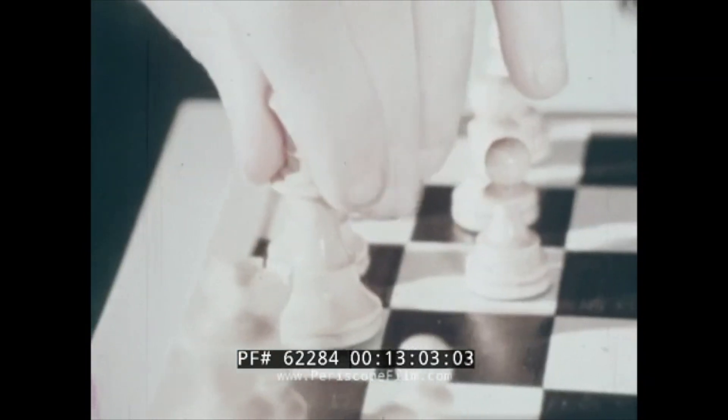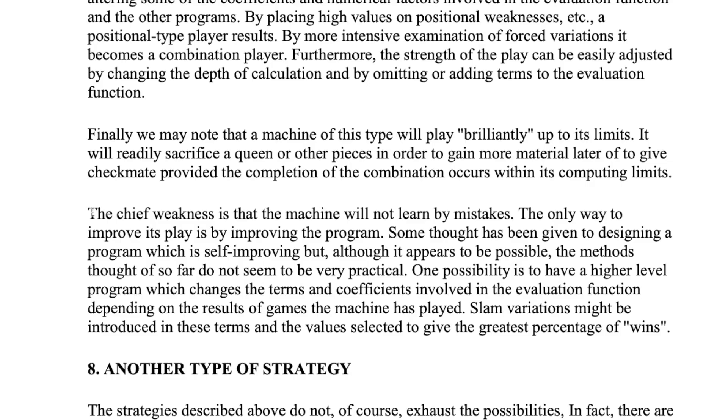While Shannon's method works pretty well, playing very average chess, Shannon notes it's fundamentally limited by the rules he created. He writes, "The chief weakness is that the machine will not learn by mistakes."